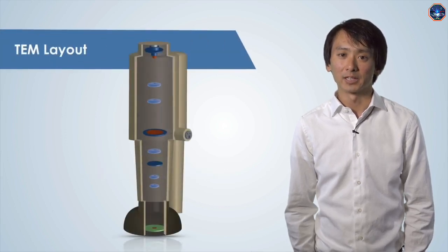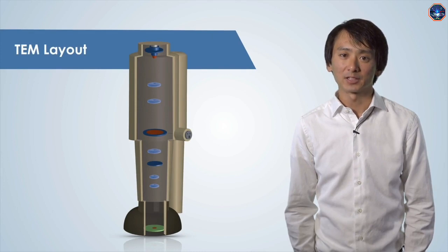Here's a diagram of the TEM. At the top of the instrument is the electron gun. There are two types of methods to generate an electron beam. The first is thermionic emission and the second is field emission.